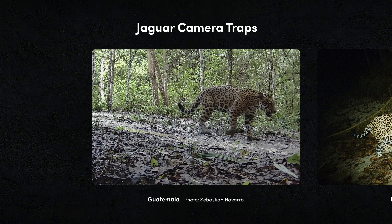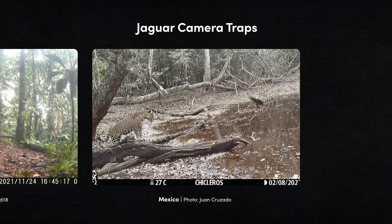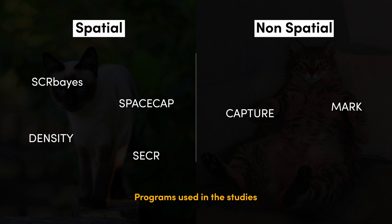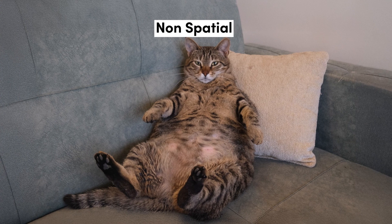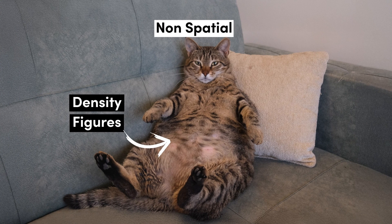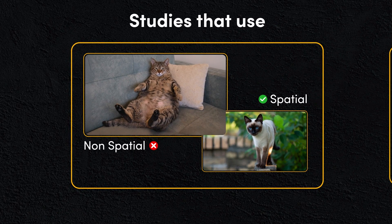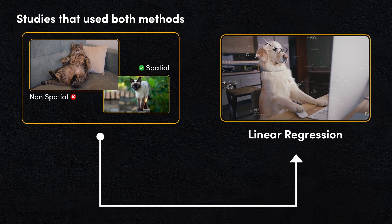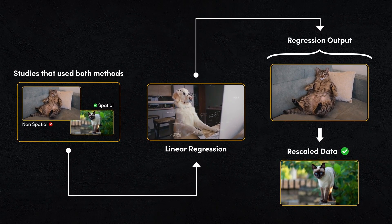This study used camera trap data from other studies but noted that not all camera trap data is equal. The programs used in these studies were classed either as using spatial or non-spatial methods, which differ in how they calculate densities, with non-spatial methods often overestimating density figures. To account for this, the researchers took the studies that used both methods and calculated how much non-spatial methods were overestimating, in order to rescale the studies that only used non-spatial methods.